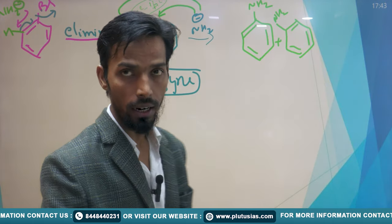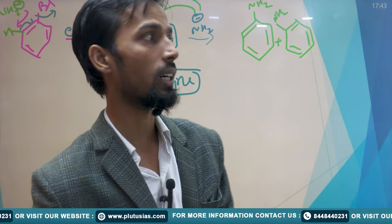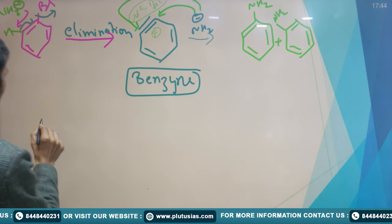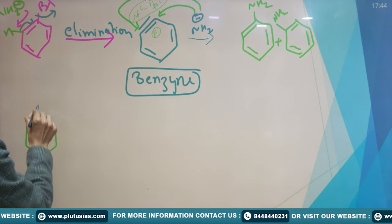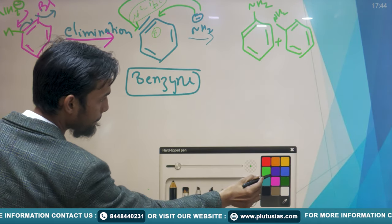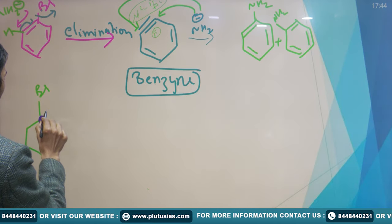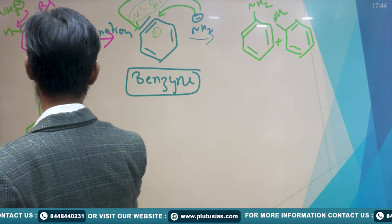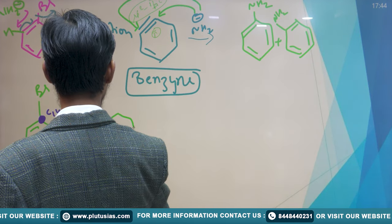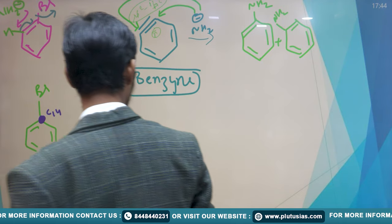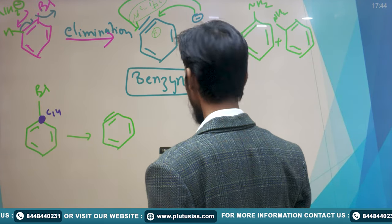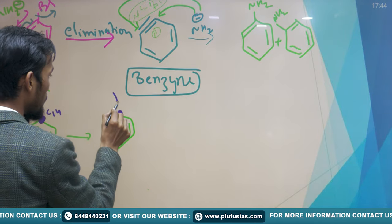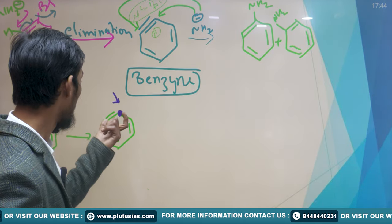To distinguish between the two attack positions, a scientist named Roberts performed an experiment known as the Roberts carbon-14 labeling experiment. He labeled the carbon bearing the leaving group (the carbon attached to Bromine) as carbon-14. So in the benzyne intermediate, this specific carbon is isotopically labeled as C-14.